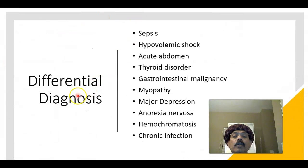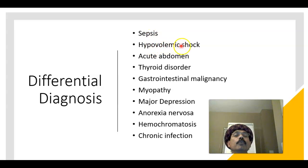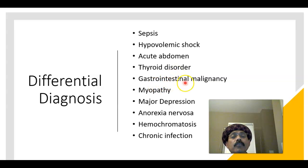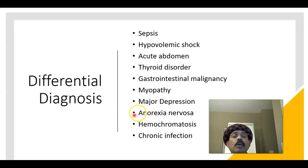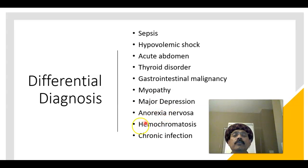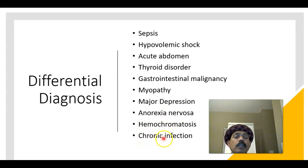What are the differential diagnoses? Sepsis, hypovolemic shock, acute abdomen, thyroid disorder, gastrointestinal malignancy or cancer, myopathy, major depression, anorexia nervosa (especially in young women), hemochromatosis, and chronic infection.